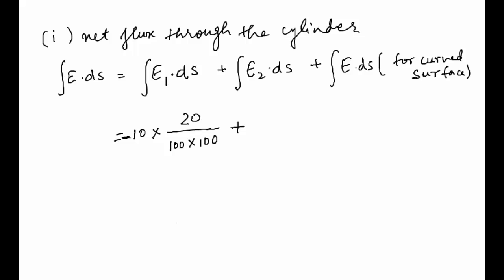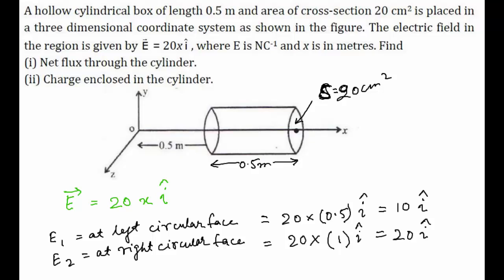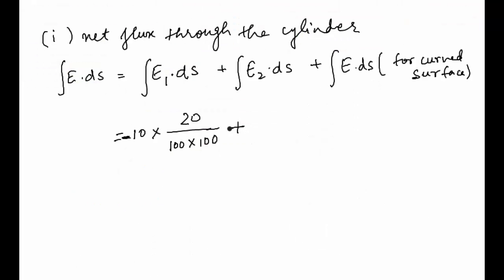In the second case, the direction is in this direction, so a positive sign will be here. E₂ = 20 × (20/100×100), converting centimeters square to meter square.